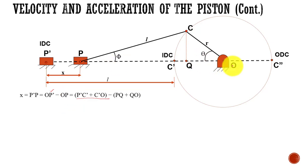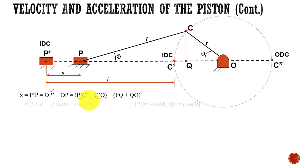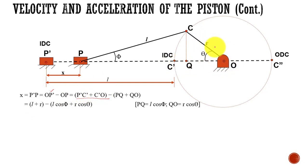OP is equal to PQ plus QO. So X, the displacement, is the distance from P-dash to P, which can be found from this representation. P-dash C-dash represents the length of the connecting rod L, and C-dash O represents R. So we have replaced P-dash C-dash with L and C-dash O with R. Then PQ equals L cos φ and QO equals R cos θ.